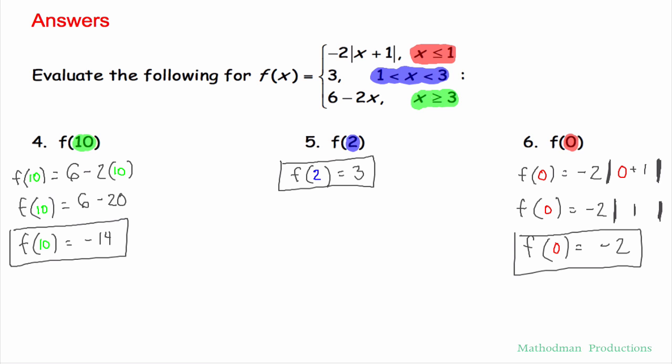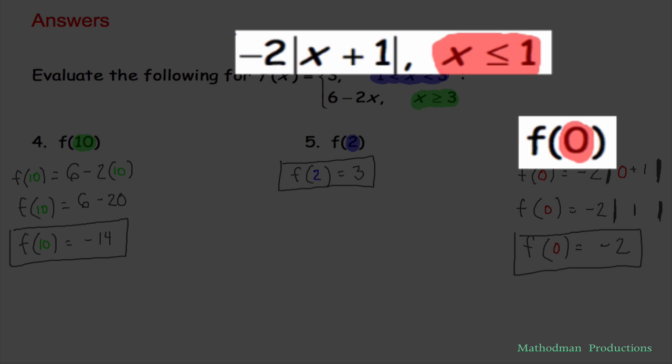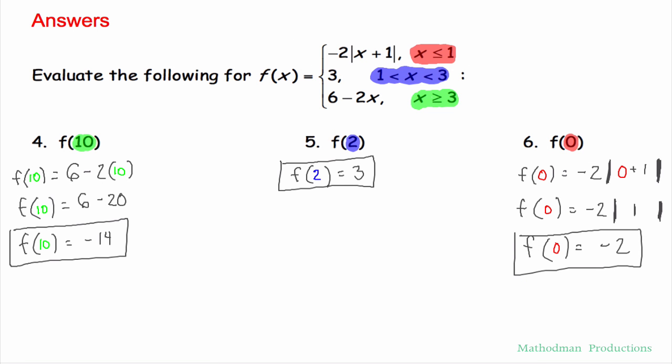The last question. Number 6. 0. 0 is less than or equal to 1. So I'm going to use the first equation. Plug in 0. Negative 2 times the absolute value of 0 plus 1 is negative 2.